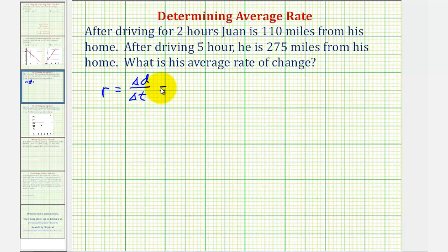So in this case, the change in the distance would be 275 miles minus 110 miles. Let's leave off the units for right now and include them at the end. And the change in time would be five hours minus two hours.